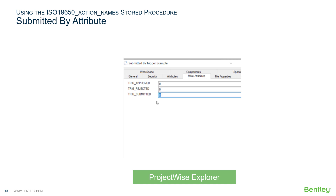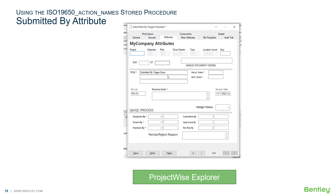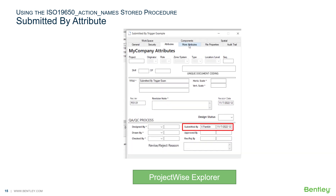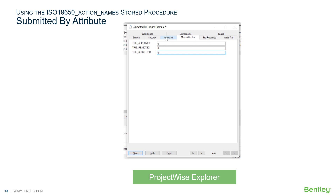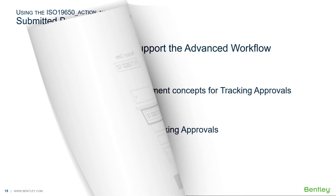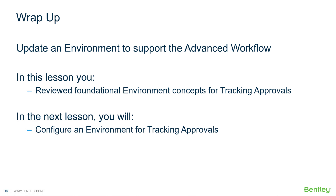Let's change the value of trig submitted and see what happens. When we set the value of trig submitted to one, the submitted by attribute will update to the user's title block name. When we set the value of trig submitted back to zero, the submitted by attribute will reset to dash dash dash. You should now have a firm knowledge foundation to configure document attributes that can track activity during the design review process. In the next lesson, we will use what we learned to configure document attributes to track approvals.